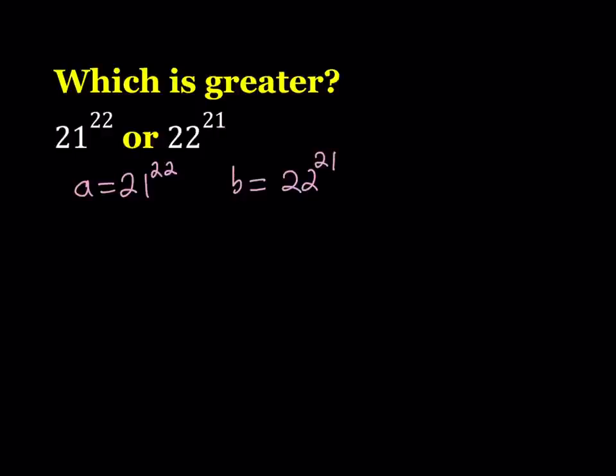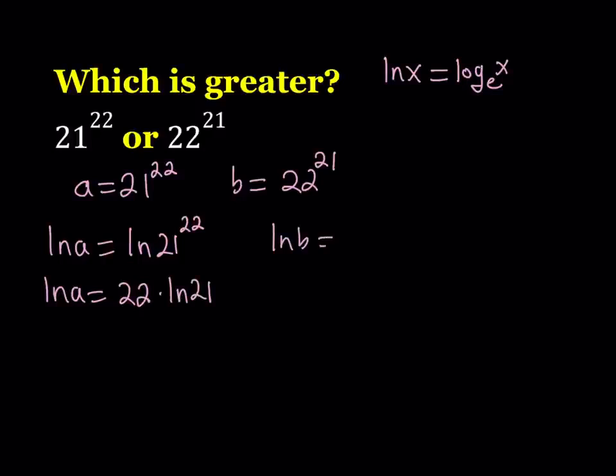I'm going to get rid of the exponents by using logarithms and I'm going to be using base E. So when I write something like ln x, it just means that it is log x with base E. Now let's go ahead and ln both sides. From here we get ln A equals ln 21 to the power 22. And when we move the exponent, we get ln A equals 22 times ln 21. We do the same thing here. ln B is equal to ln 22 to the power 21, and we get ln B is equal to 21 times ln 22.